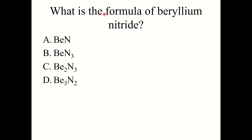Knowledge check: What is the formula of beryllium nitride? The correct answer is Be3N2. Beryllium is in Group 2A, so it has a charge of +2. Nitrogen is in Group 5A, so it has a charge of −3. When you cross the charges using the criss-cross rule, you get Be3N2.